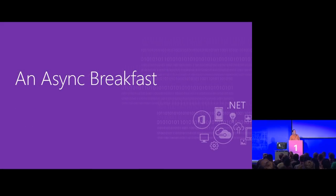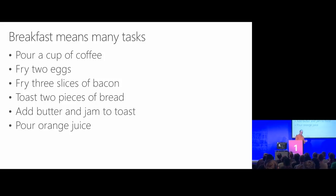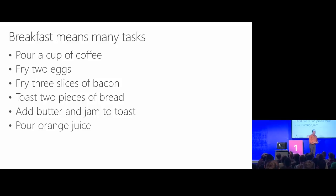The arc of this talk: we're going to imagine something we do every day, describe it to another human the way we would, look at how a computer would execute those steps and point out that it really isn't what we want, then talk about what asynchronous means and what that would do to our code. So here's the analogy: we're going to make breakfast. I'm going to make an American breakfast — pour a cup of coffee first, fry two eggs, have three slices of bacon, toast two pieces of bread, add butter and jam, pour orange juice, then sit down and eat.